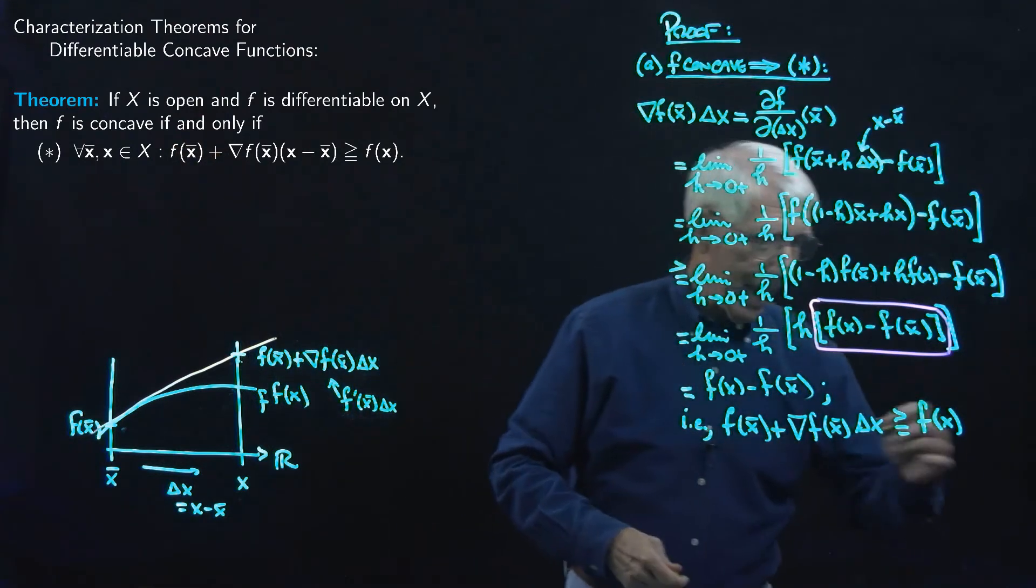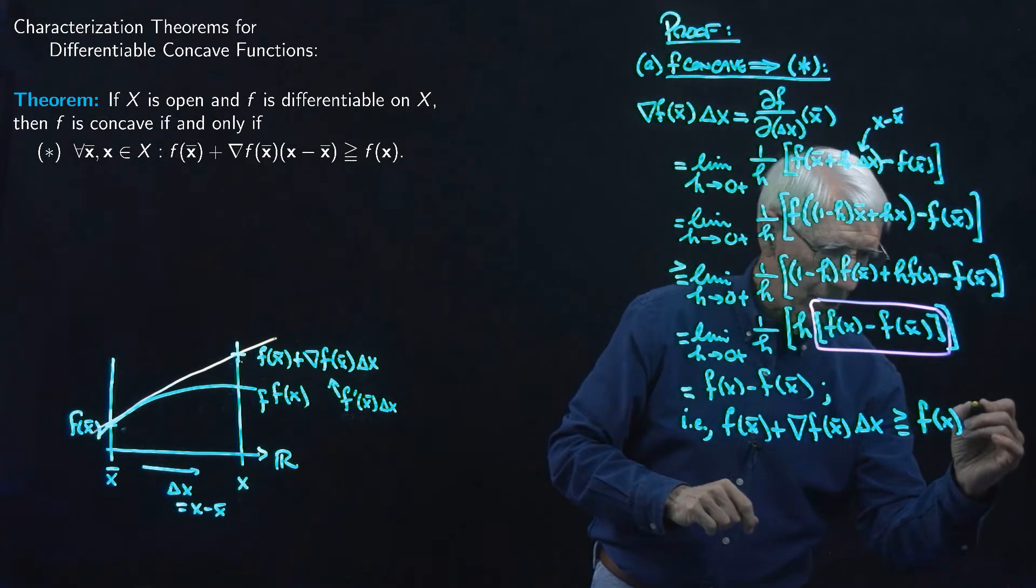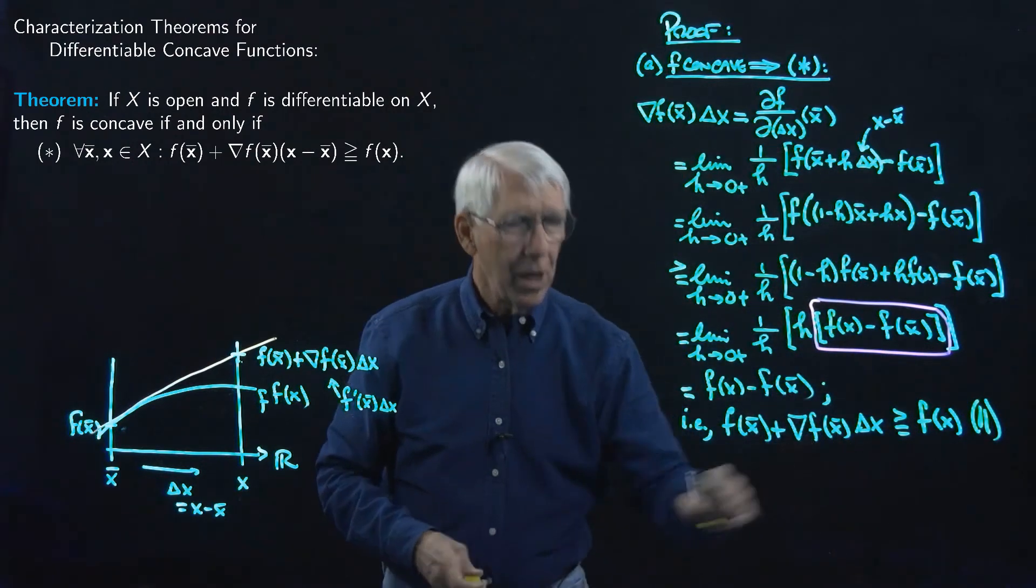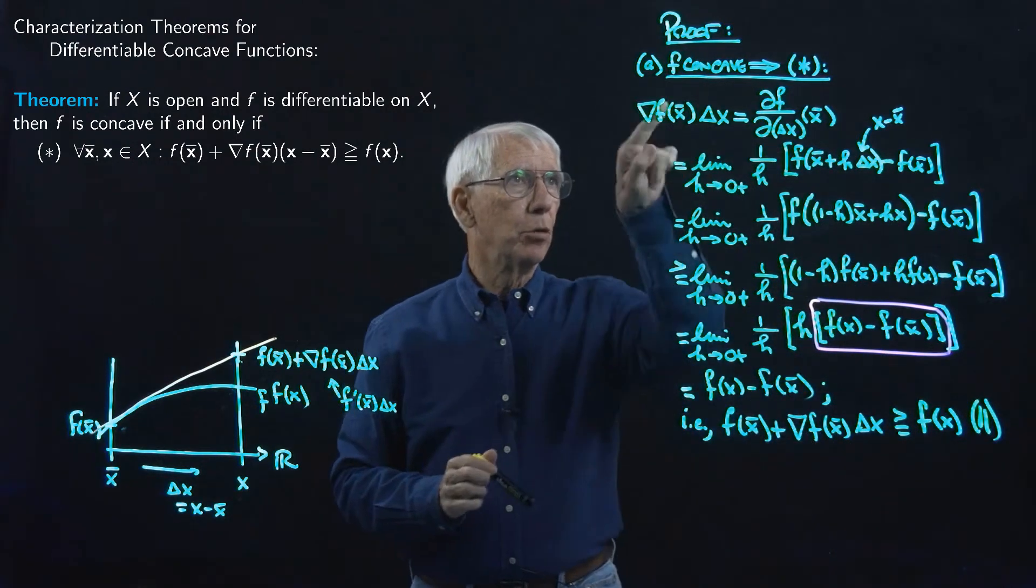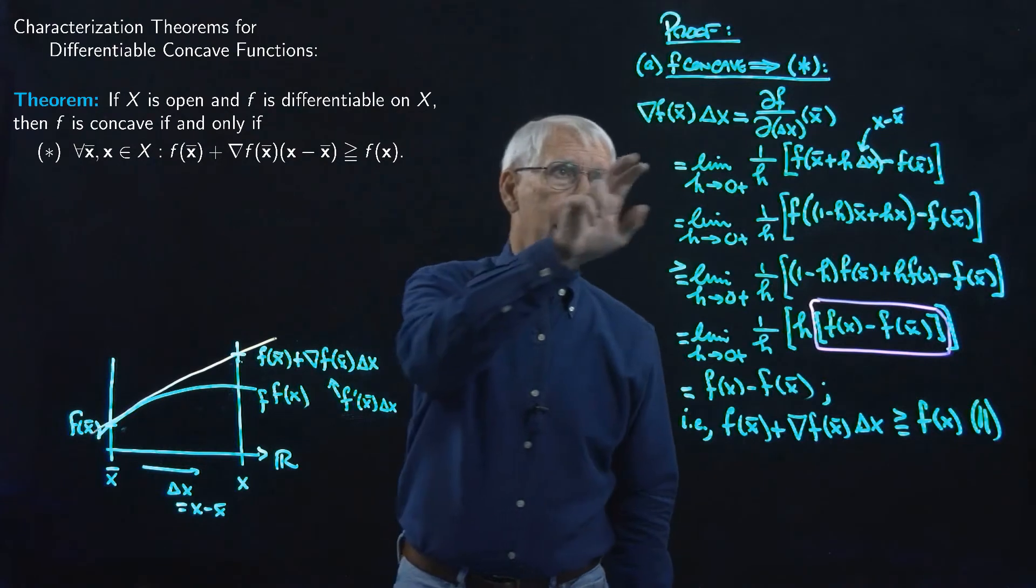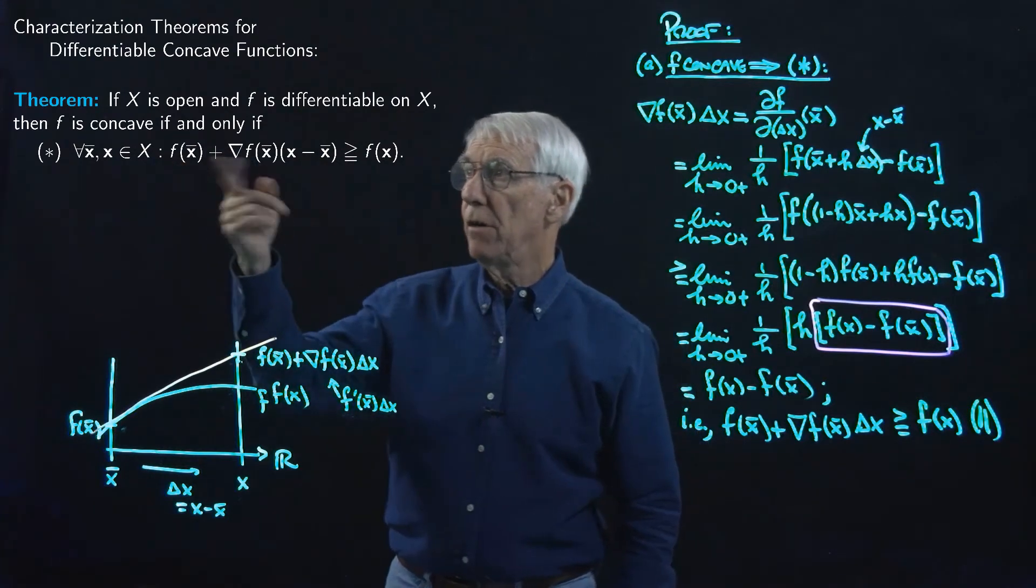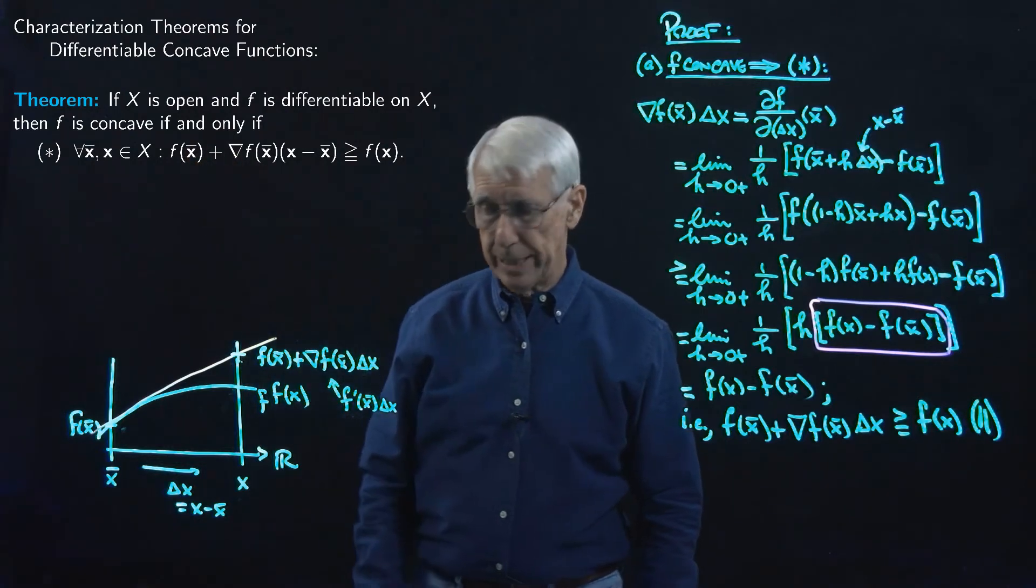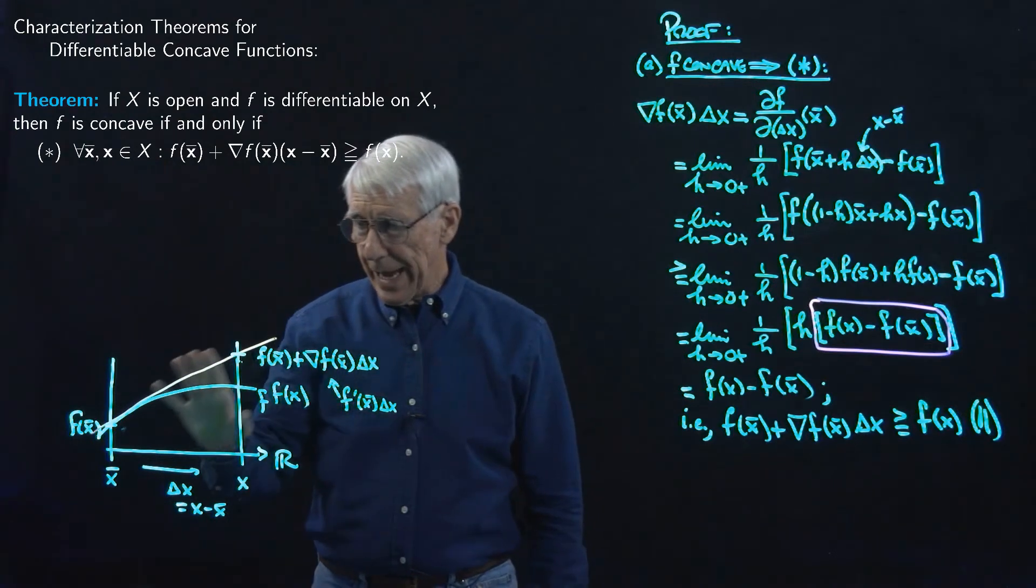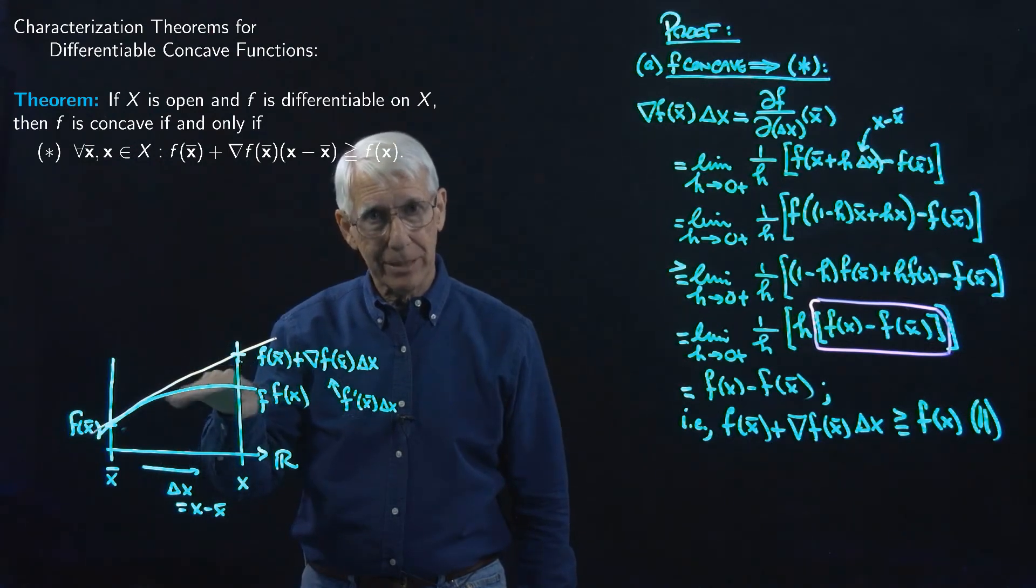So in fact, that gives us a completion of the proof in this direction. So let me just write this in parentheses, because we're not done with the proof, we're only done with the proof in this direction. We're done with the proof that says if F is a concave function, then this star condition has to be satisfied, this star first order condition on the gradient has to be satisfied. And so all we've done is prove that if F is concave, things have to look like this picture, this has got to be actually the right picture.